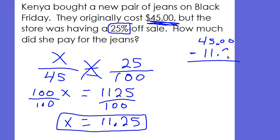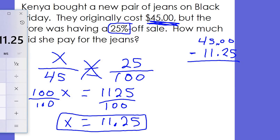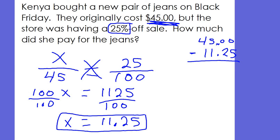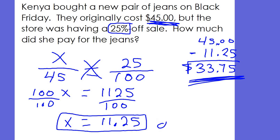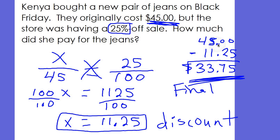So we're going to take $45 and subtract $11.25. $45 minus $11.25 is $33.75. That's how much she paid for the jeans because they were on sale for 25% off. The discount she got for the sale was $11.25. But the final price is what you get when you take the price you started with and subtract the discount.